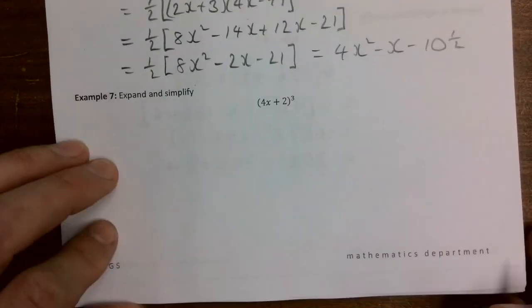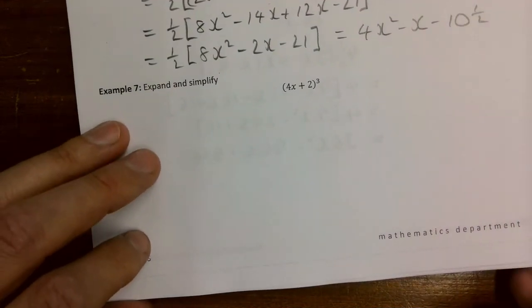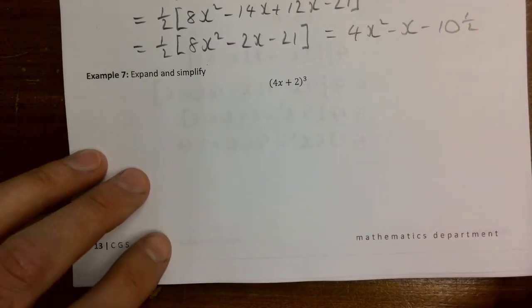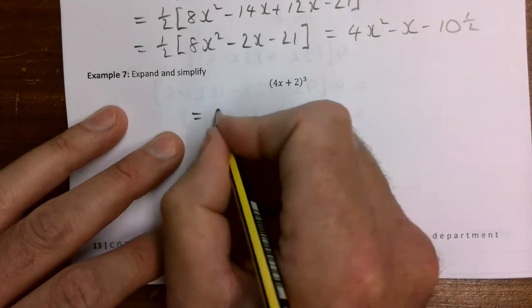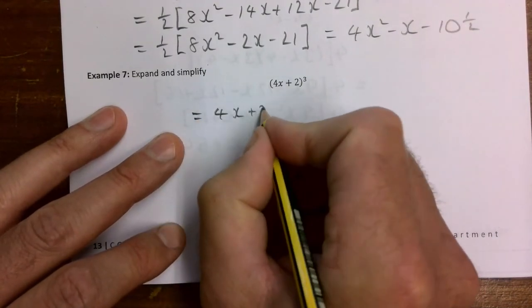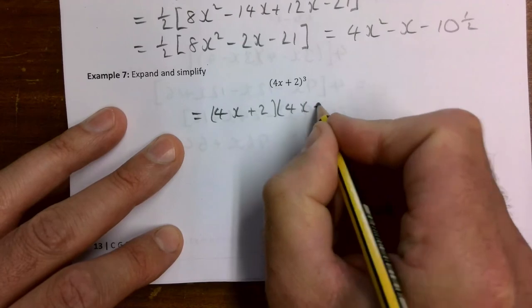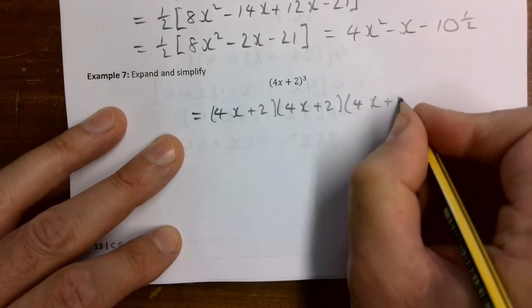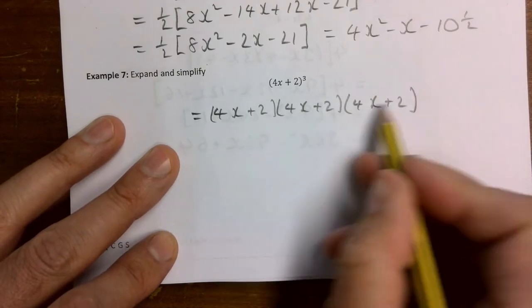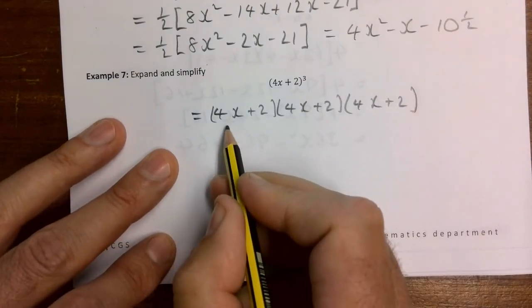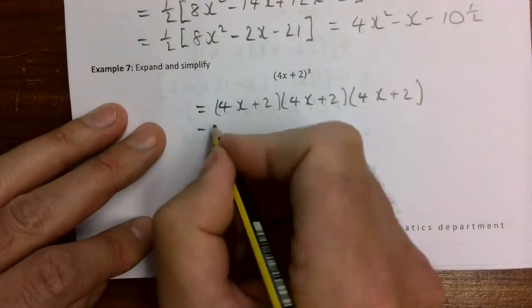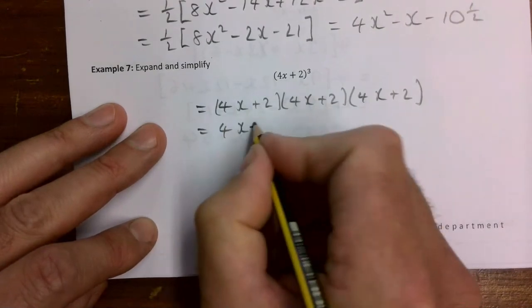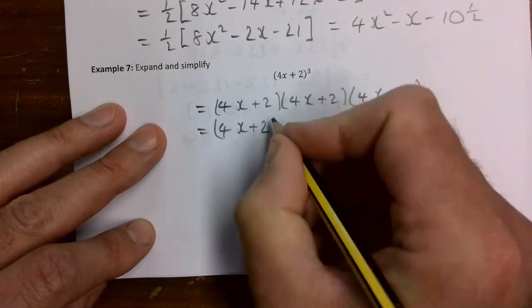Final example is (4x plus 2) cubed. Don't know if I've seen this one before. I think most people know that's (4x plus 2)(4x plus 2)(4x plus 2). So we're going to multiply out these two and keep this sticking out the front, and then sort it out at the end. I'm going to put a square bracket here again - yours doesn't need to be square, it can be round.